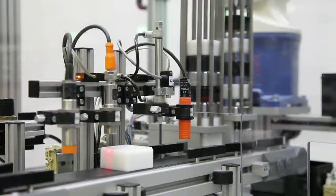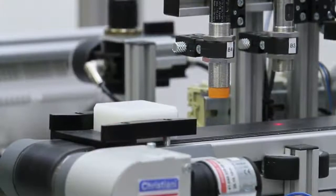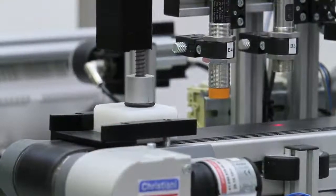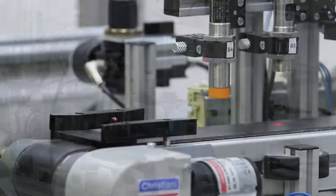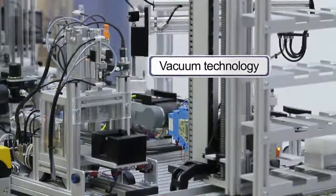Workpieces that meet the defined requirements are picked up at the end of the conveyor belt by an electro-pneumatic handling device with three motion axes and transported to the next processing stations.